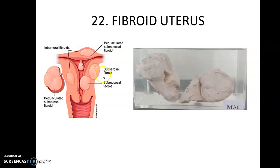These are very common specimens asked. The examiner can ask you what are the secondary changes in a fibroid. It can have red degeneration, hydropic change, hyaline change, myxoid change, and it can undergo calcification.